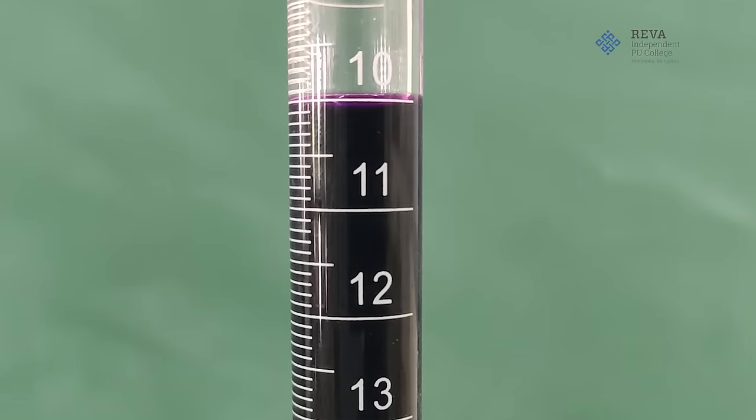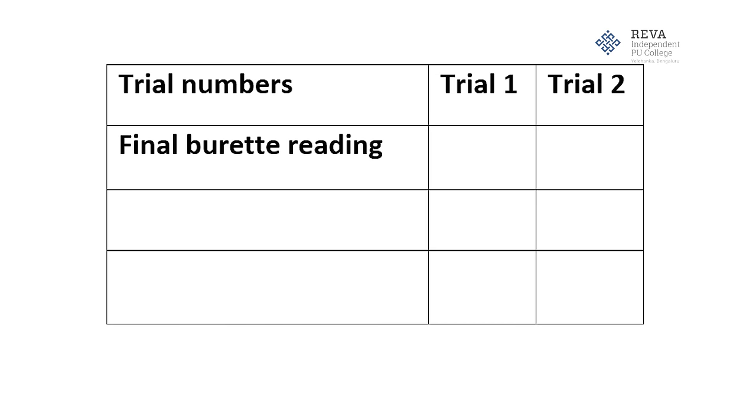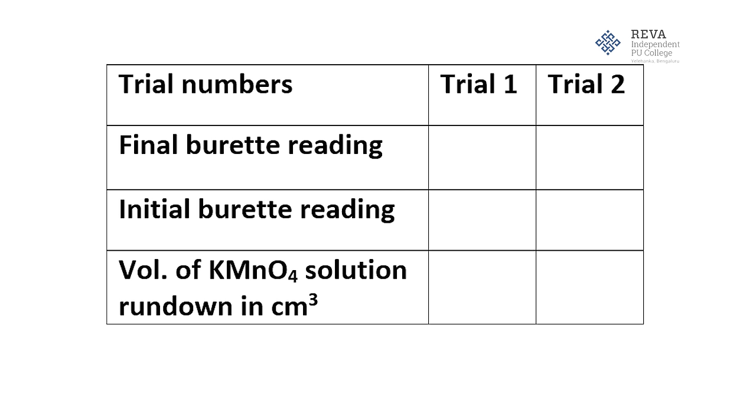Now, the final burette reading what we obtain is 10 cm³. Note down this burette reading in tableau column. In the tableau column, we have trials followed by final burette reading, initial burette reading and volume of KMnO₄ in cm³. This is the first reading.